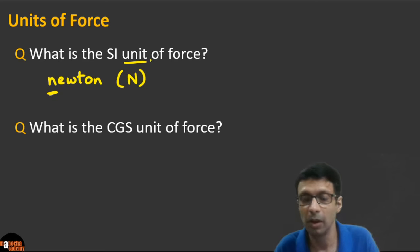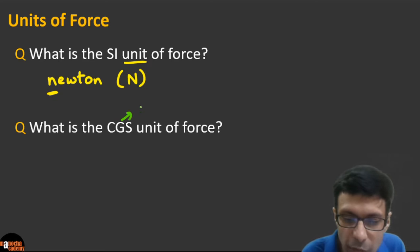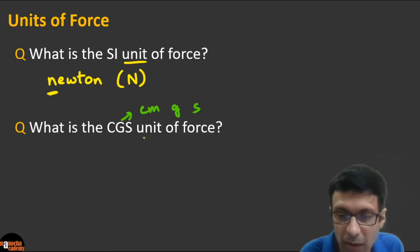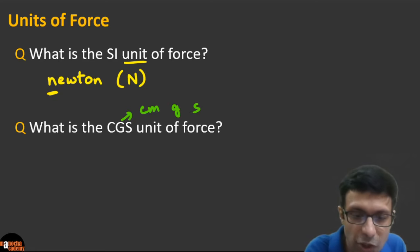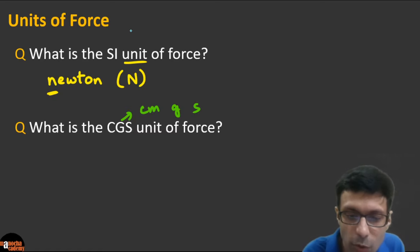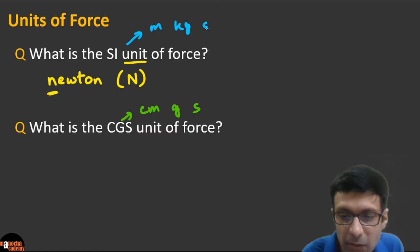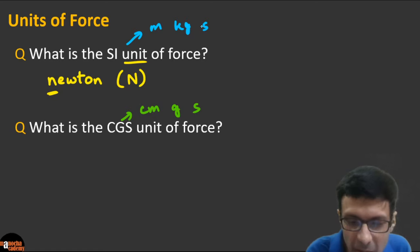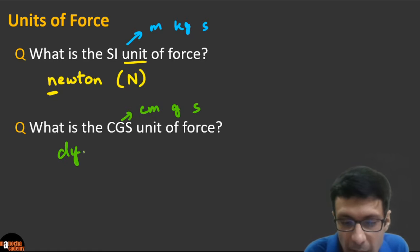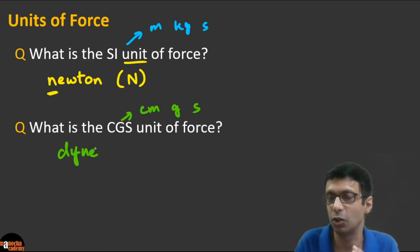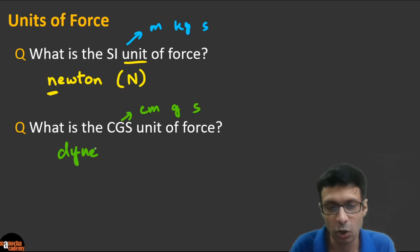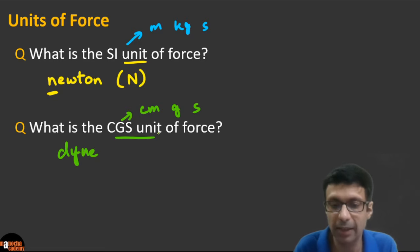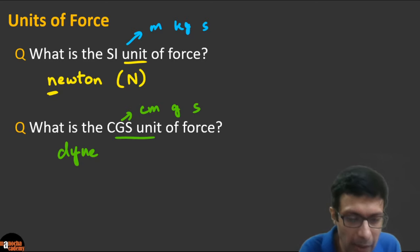The CGS unit of force is the dyne. CGS stands for centimeter-gram-second, as opposed to SI which uses meter-kilogram-second. Write 'dyne' with a small 'd' — not a capital letter.